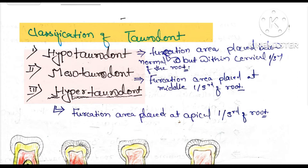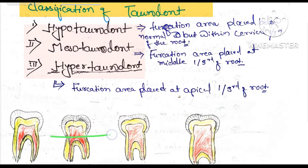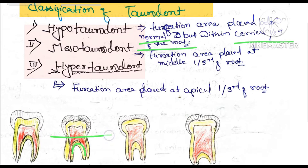This is hypotaurodont — the furcation area is placed just below the normal area, within the cervical one-third of the root. This line here marks the normal area, and the bifurcation is located below it within the cervical one-third.